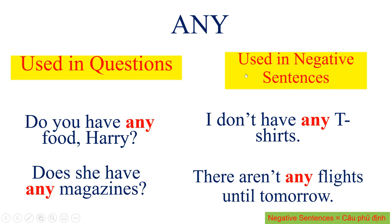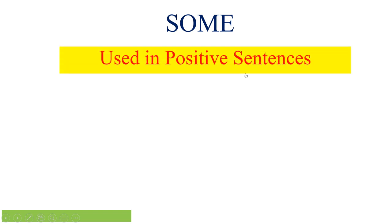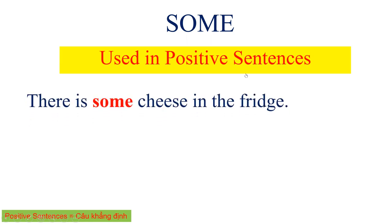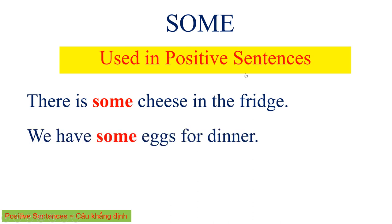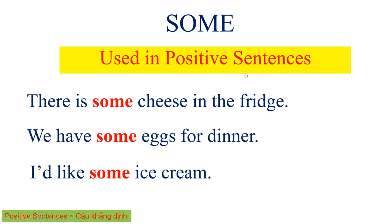Now let's move to the last word of this session: 'some.' Some is used in positive sentences. For example: There is some cheese in the fridge. We have some eggs for dinner. I like some ice cream. These examples are all positive sentences, so 'some' is used here.